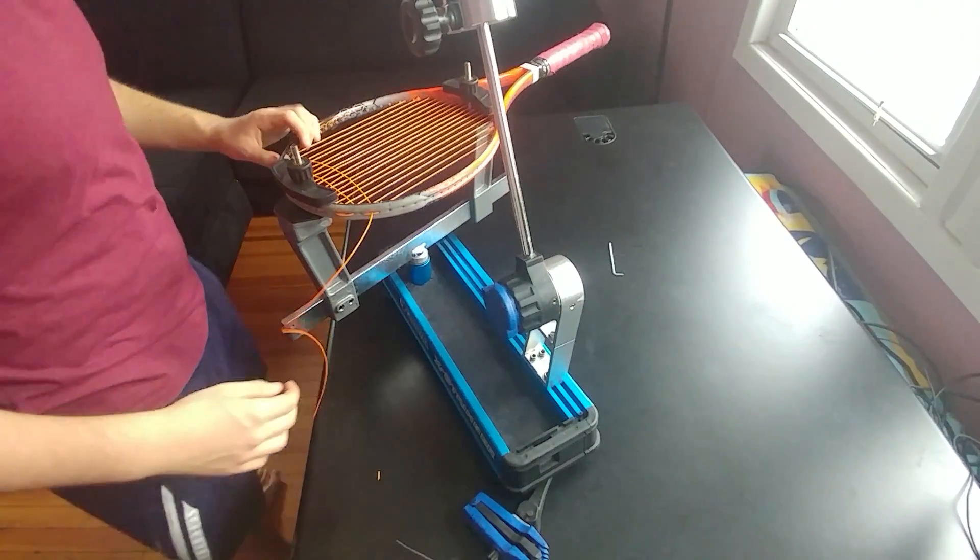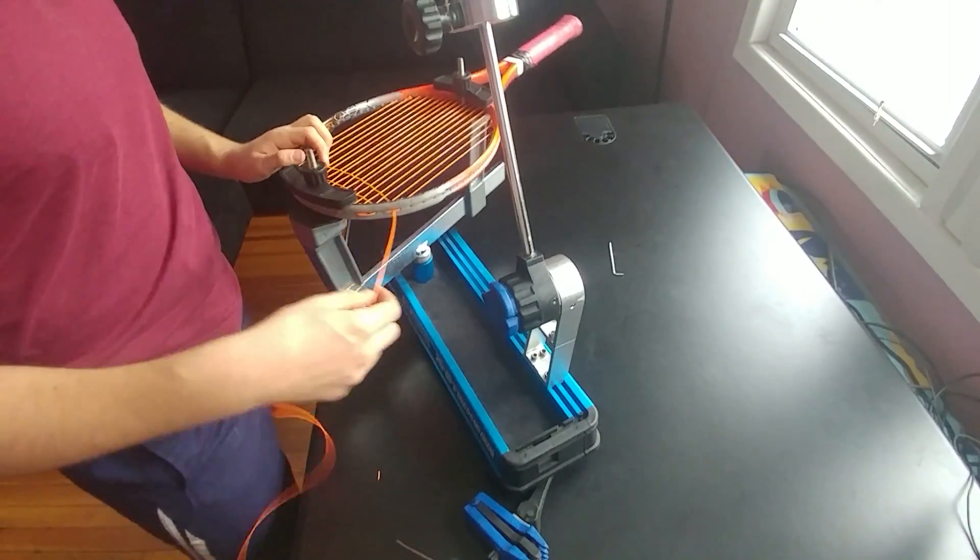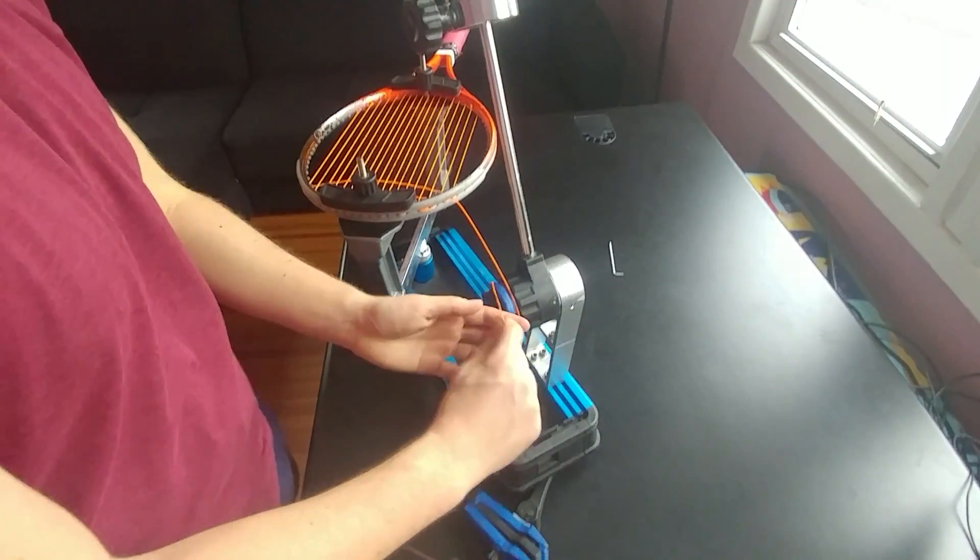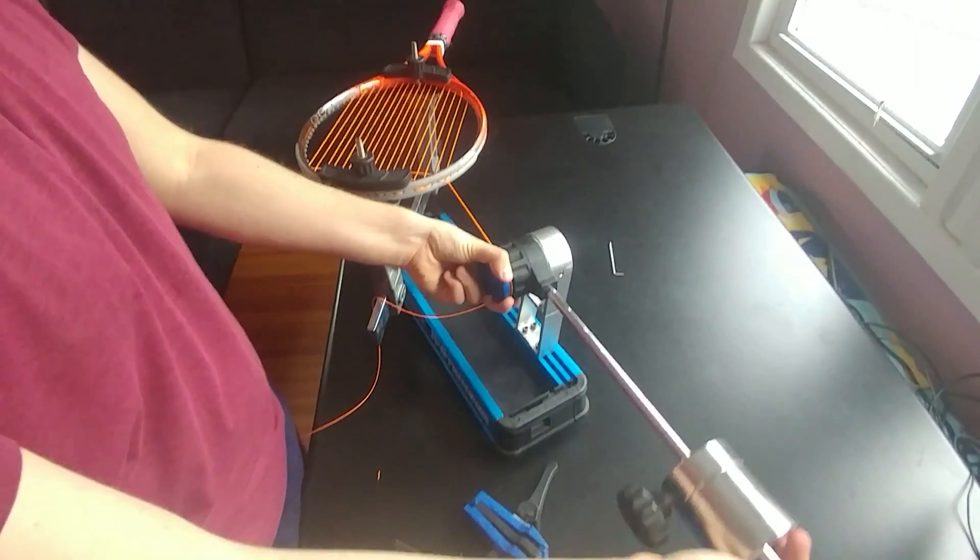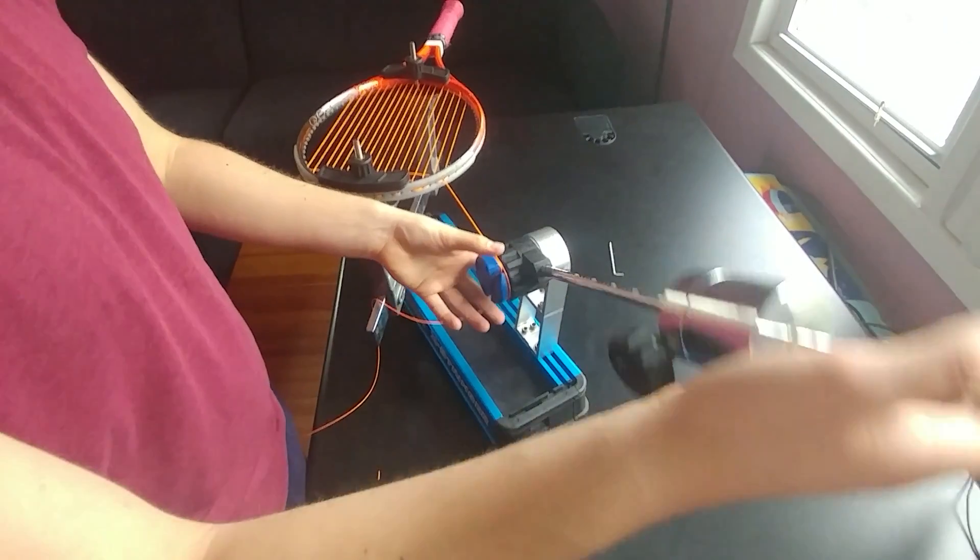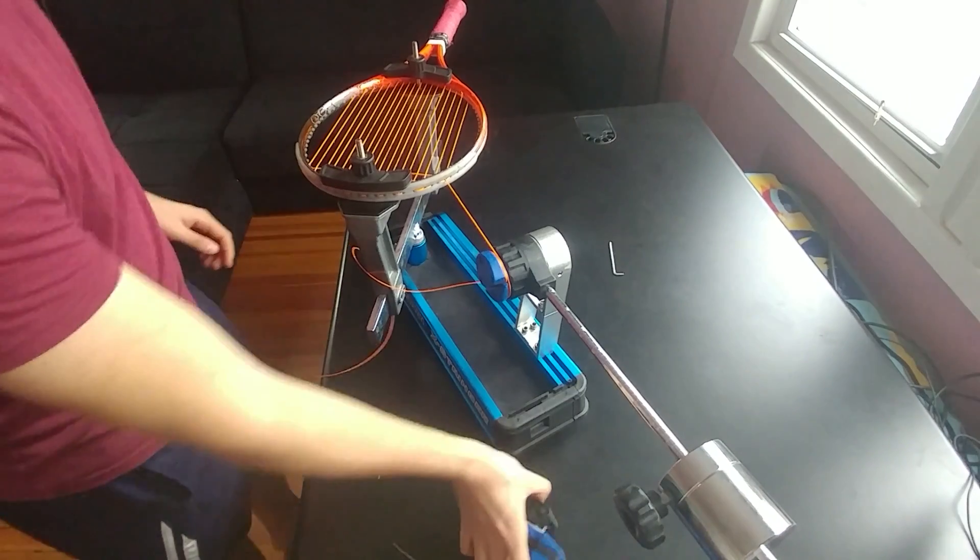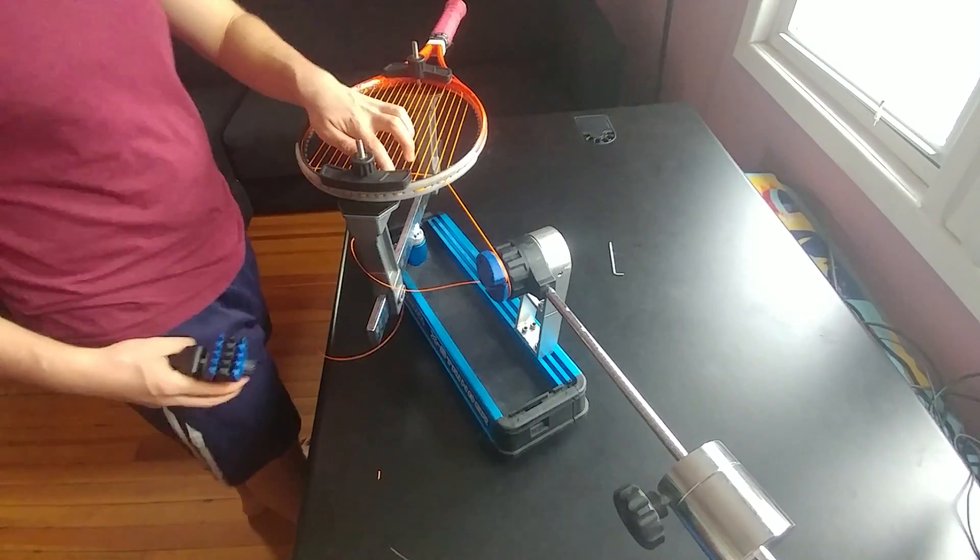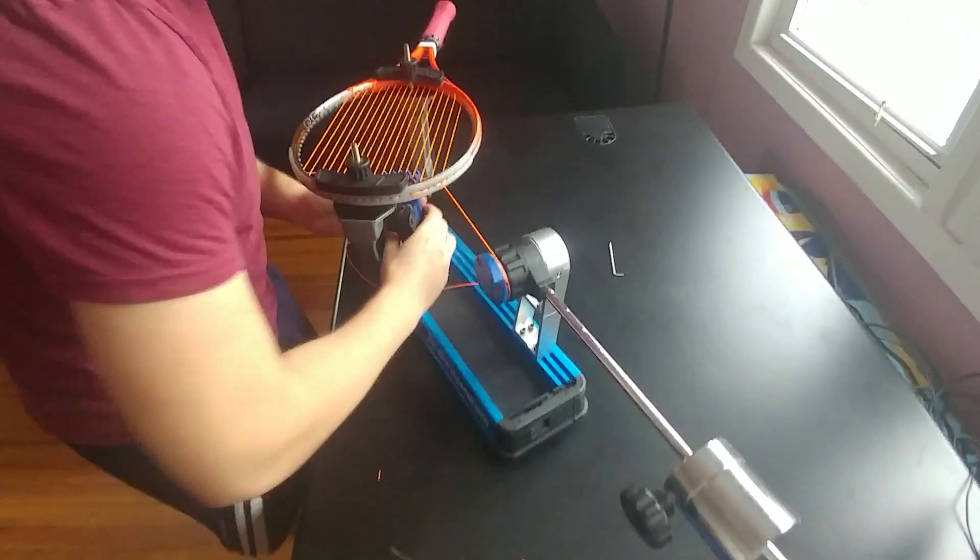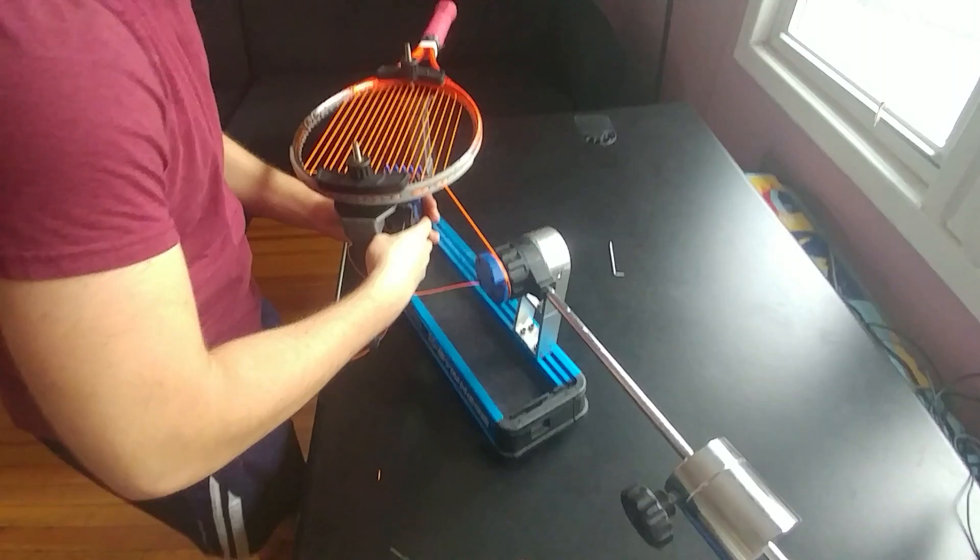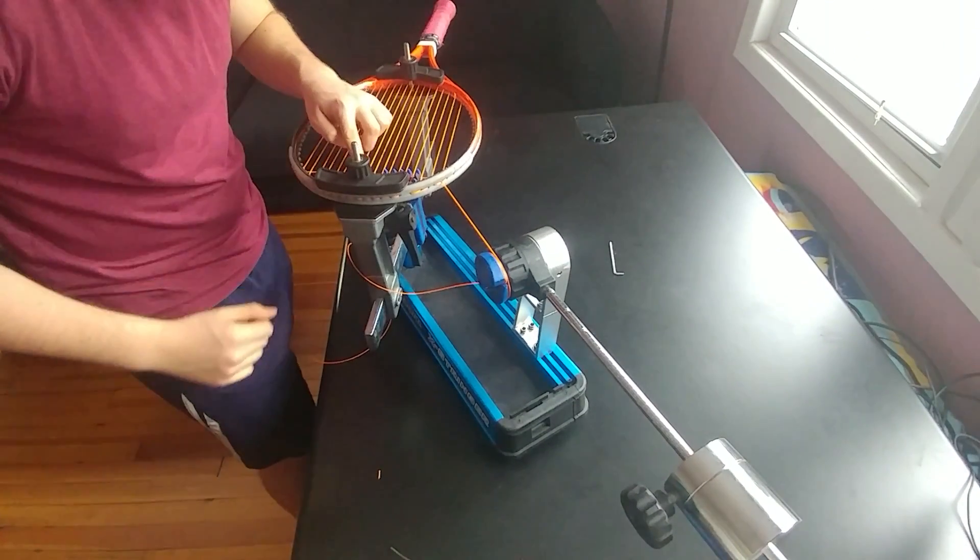Now since you cannot clamp with one string, you need two strings to do your first clamp and you again will do 56 pounds of tension or whatever tension you set for yourself. Same thing. Make sure it's perfectly parallel. And you would just need one clamp for the process, so clamp your first two. It's a little hard to get this one. Make sure all the strings are perfect.